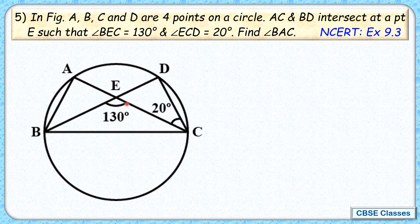Angle BEC is 130 degrees, angle ECD is 20 degrees, and we have to find the value of angle BAC. This green angle is what we have to find.